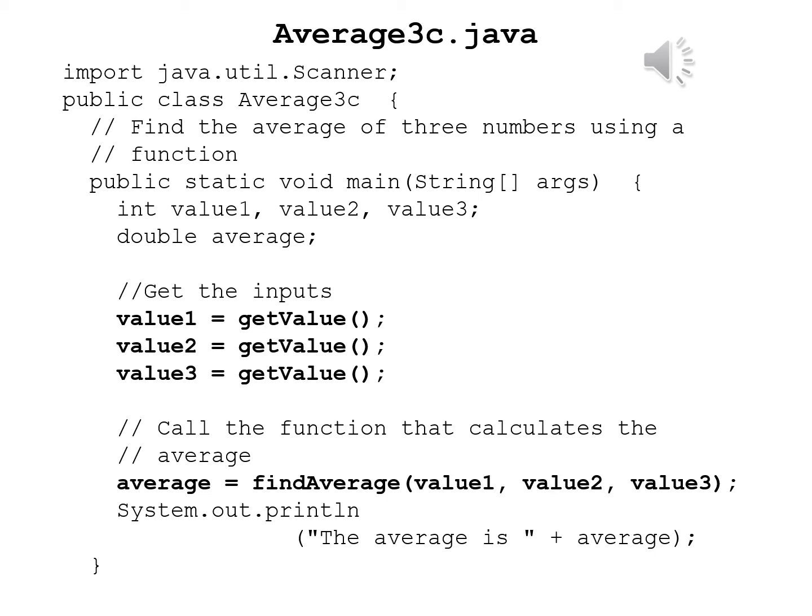We declare our three values to be averaged: int value1 comma value2 comma value3 semicolon, and of course double average semicolon, which is where we will store the average.